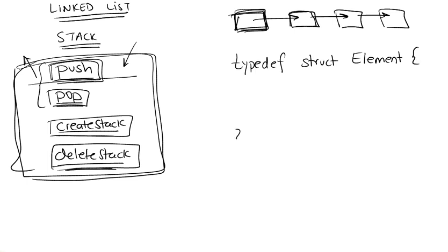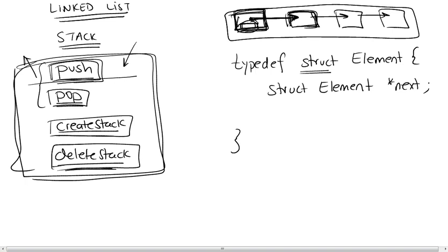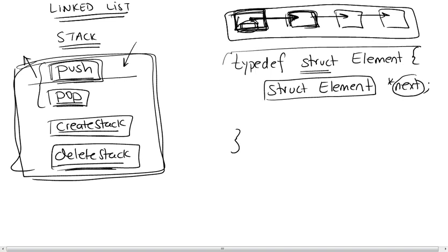We open curly braces and define what the struct is going to contain. Every node in the list will contain two things: a pointer to the next element in the list, and the data we're trying to store. The first thing to define is your next pointer. You do that by writing struct element, then next. This effectively tells us we have a pointer called next to a structure element — the one we're defining at this moment. This is our pointer to the next element in the list.